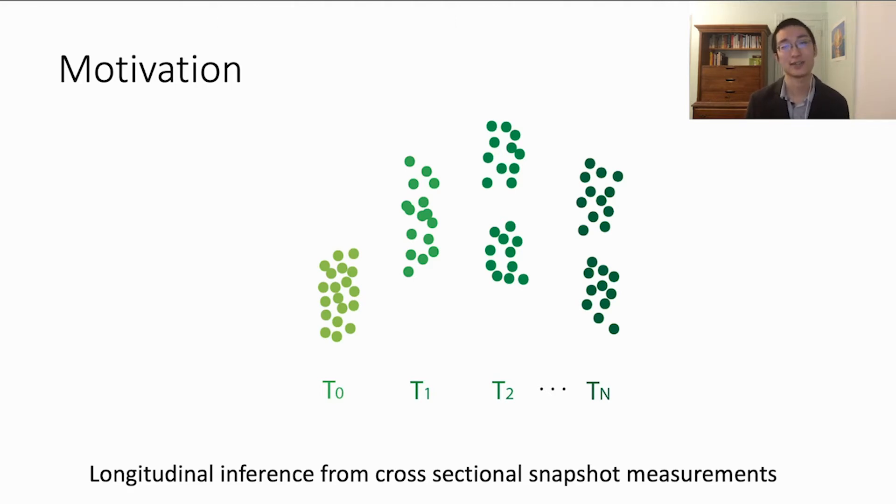Here we focus on cells. Current technologies require destroying the cell, preventing measuring the same cell at more than one time point. We are able to sample the population at some discrete time points, but individual cells do not correspond between time points. This data must be processed at a distribution level.